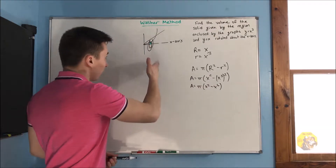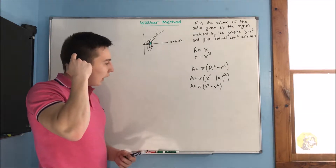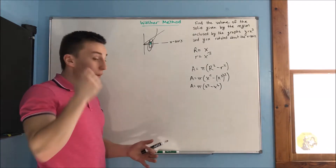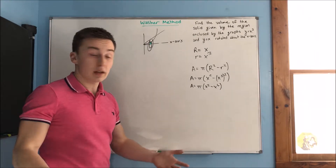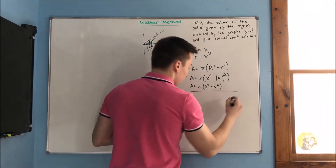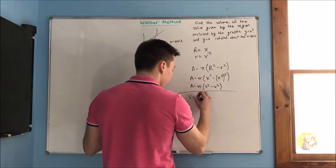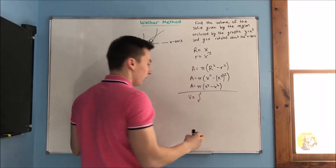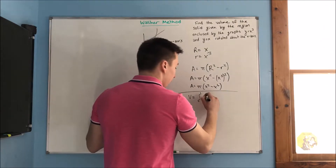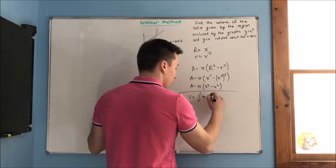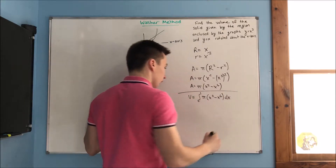Those cross sections are when you cut this way — we cut and get our cross sections. Now we have to add them up, and how do we add those cross sections up? We take an integral, which adds up each of the cross sections giving us our volume. So our volume is going to equal the integral from 0 to 1 of pi times x squared minus x to the sixth dx.